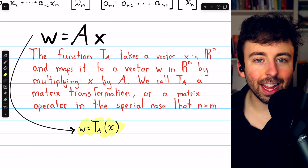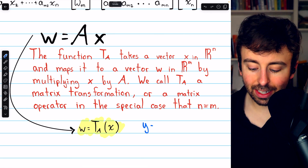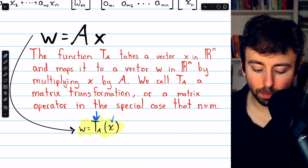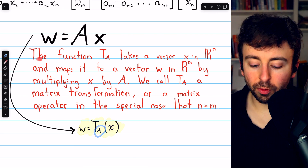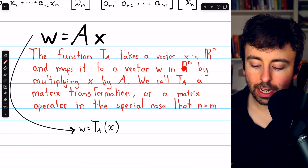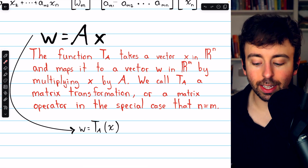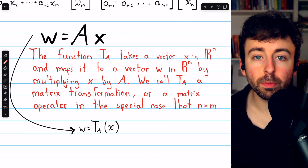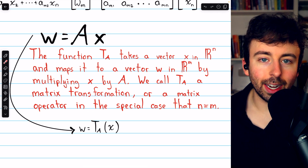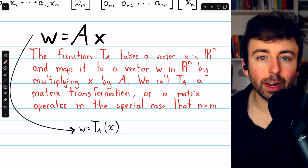This equation really describes a function. We can make that clear by writing it with function notation: W equals TA of x. This is just like the familiar y equals f of x. But in this case, our function is TA, a matrix transformation that works by multiplying the input vector by the matrix A. The function TA takes a vector x in Rn and maps it into a vector w in Rm by multiplying x by that matrix A. We call TA a matrix transformation, or a matrix operator in the special case that n equals m, so the domain and codomain are the same.